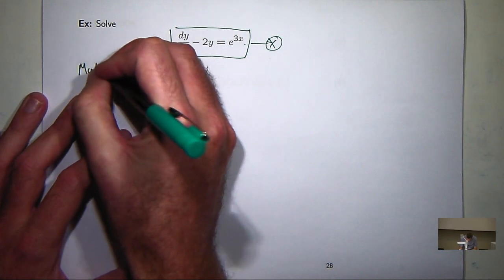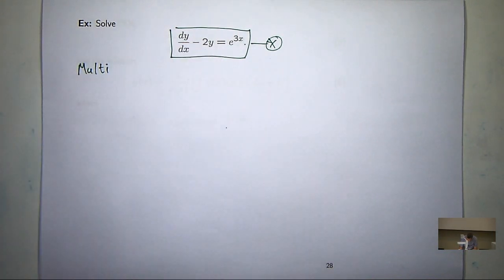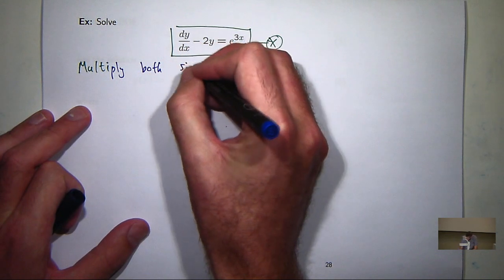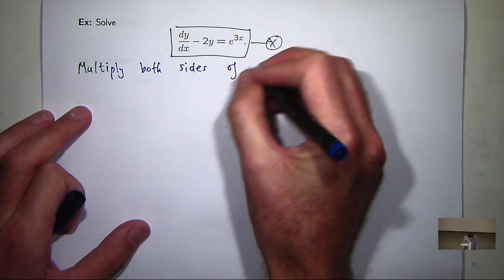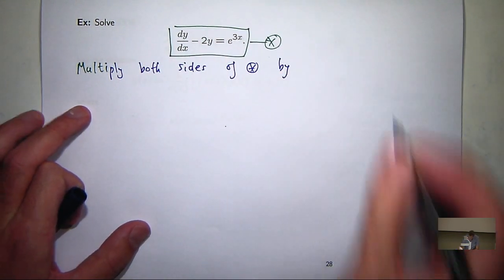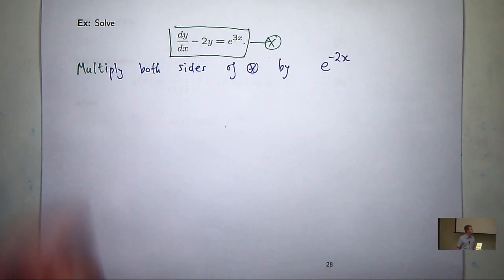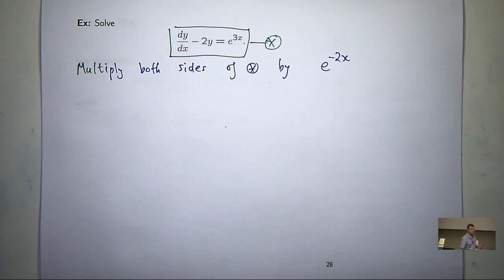I'm going to multiply both sides of my differential equation by a special function, e to the minus 2x. Now you might think, hang on, first of all, why would you want to do that, and where did that come from? Well, just bear with me, we'll get to that in a minute.